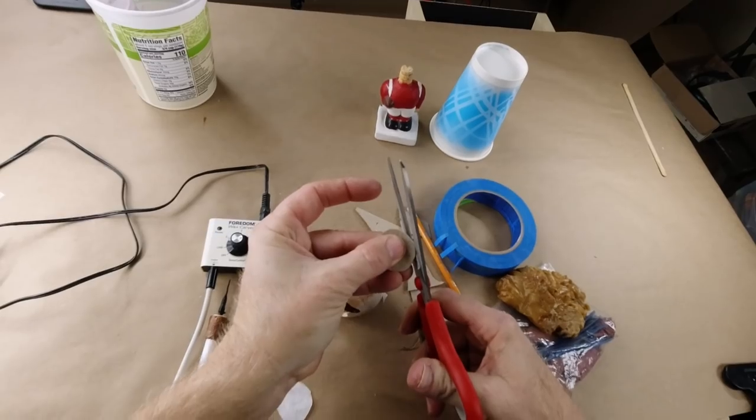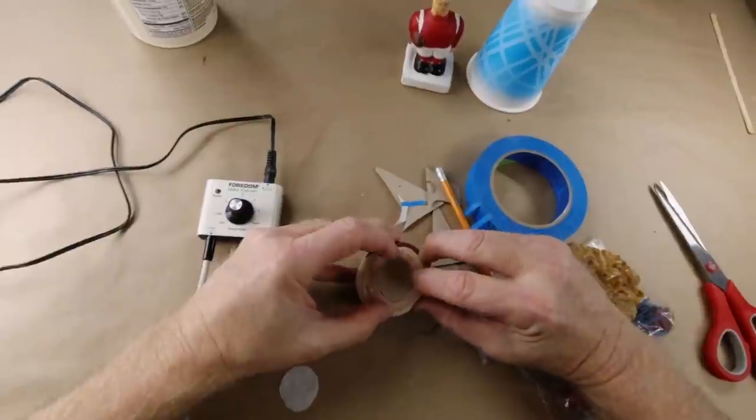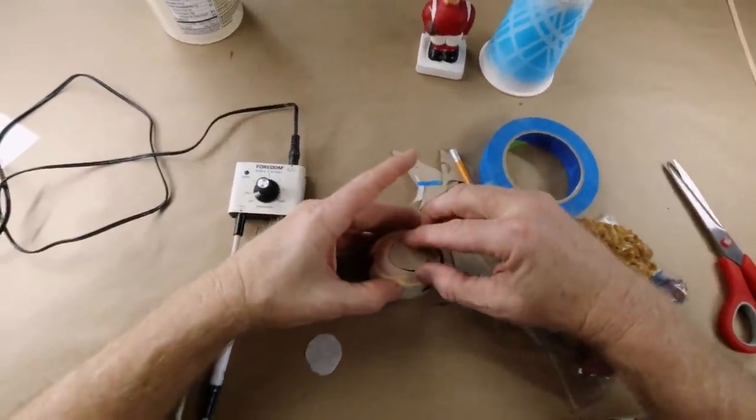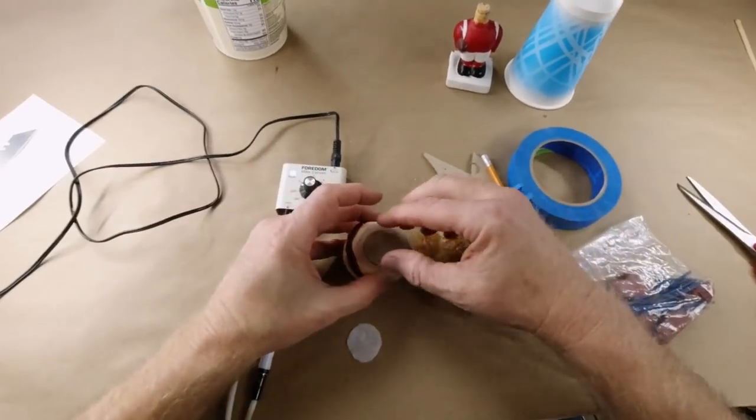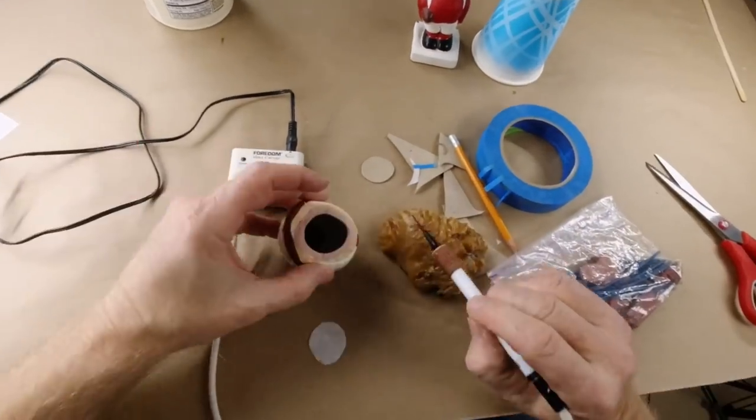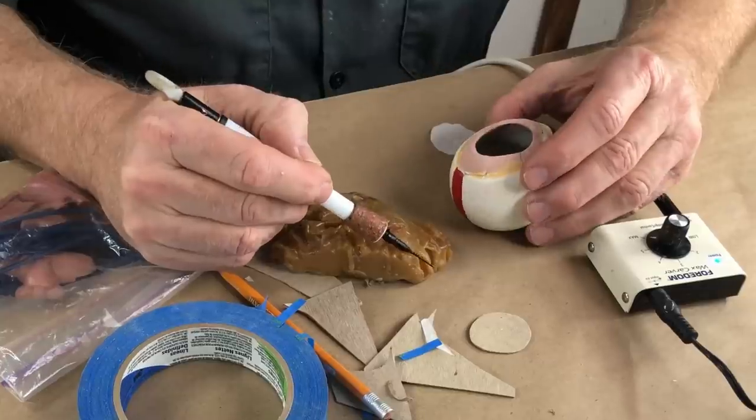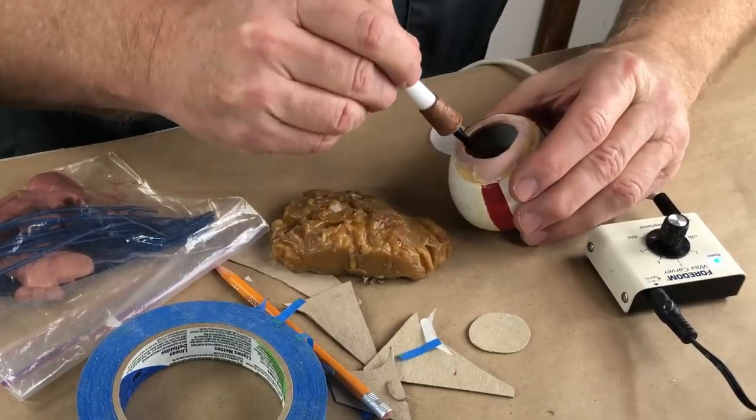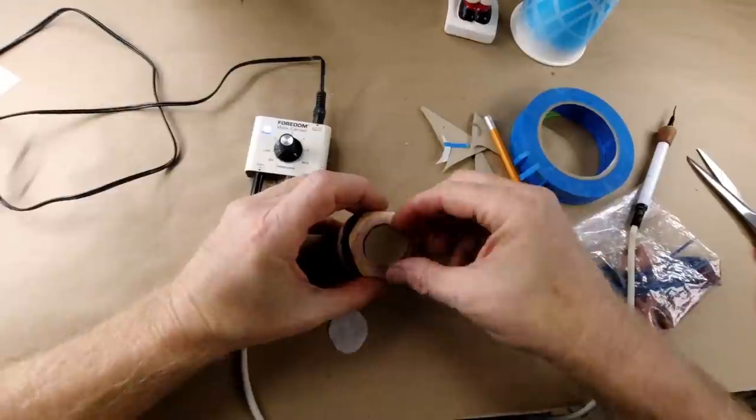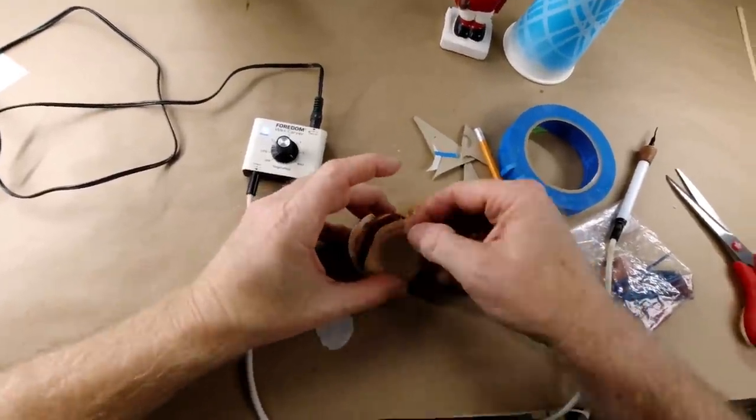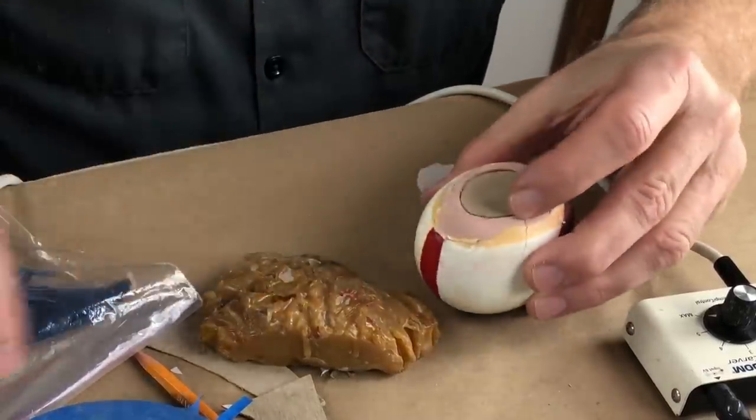And now all we have to do is cut it out. We'll cut accurately to our trace line. What you don't want to do on the first go is make it too small. You make it too small and it just falls through, or you have just humongous gaps to close up. That just causes you problems. That's pretty tight. That sets right in there. So now you know what time it is. Break out the sticky wax.